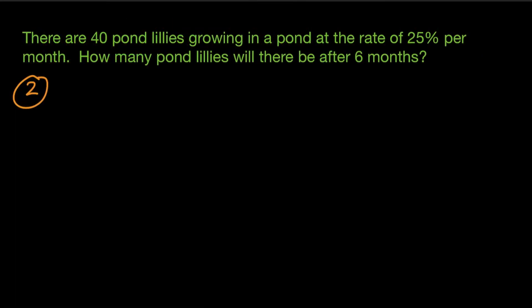Okay, now for example two, let's try this one. So at the rate of 25% per month. And how many pond lilies will there be after six months? So again, this is an exponential growth function because it's obviously growing. The pond lilies are growing at a rate of 25% per month. So we're going to use that first equation, y equals a times one plus r to the t.